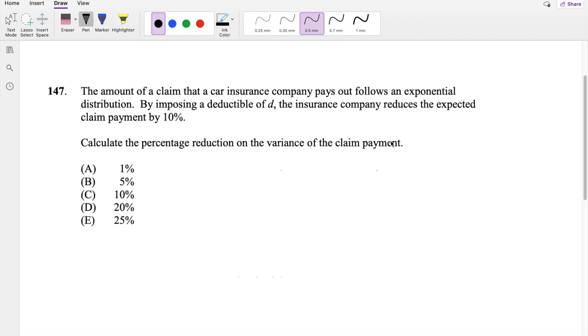Okay, assuming you already attempted it, let's just dive right in. So the amount of claim payment that a car insurance company pays out follows an exponential distribution. So we know that for exponential distribution, the expectation of X is equal to lambda. If it's equal to lambda, then the variance of X we know to be lambda squared.